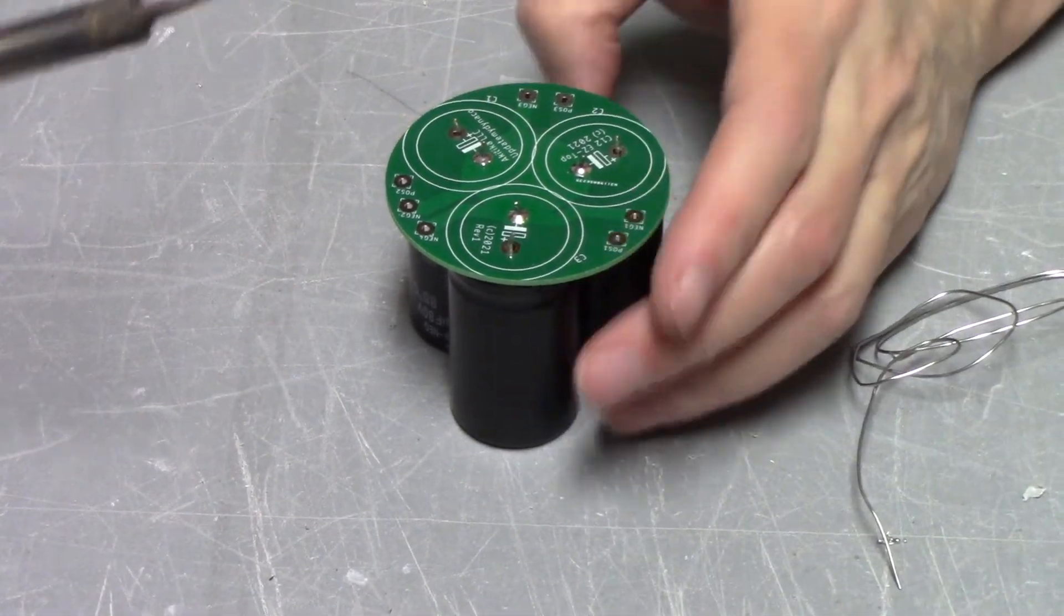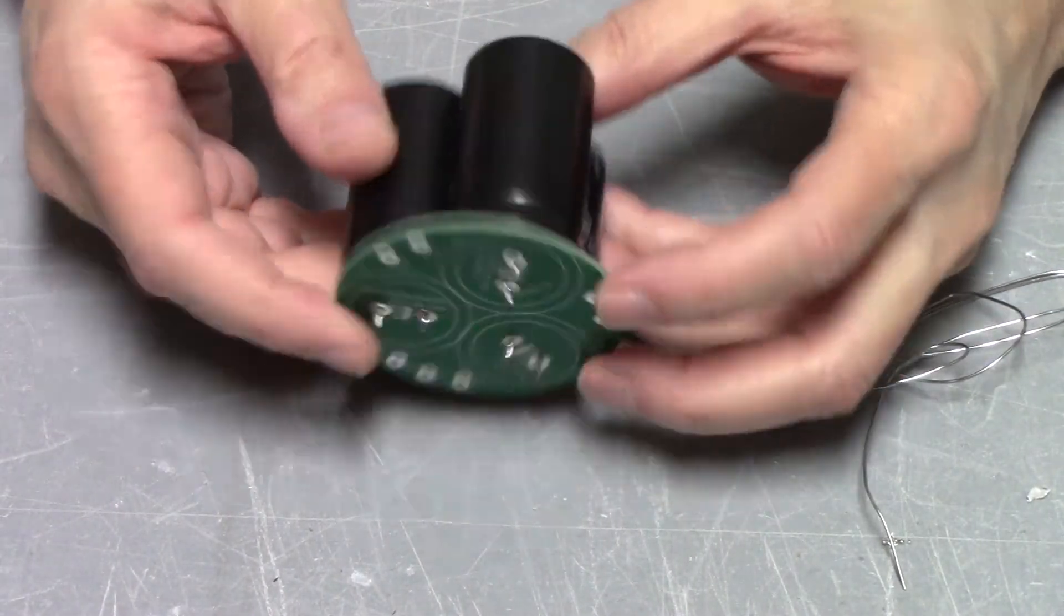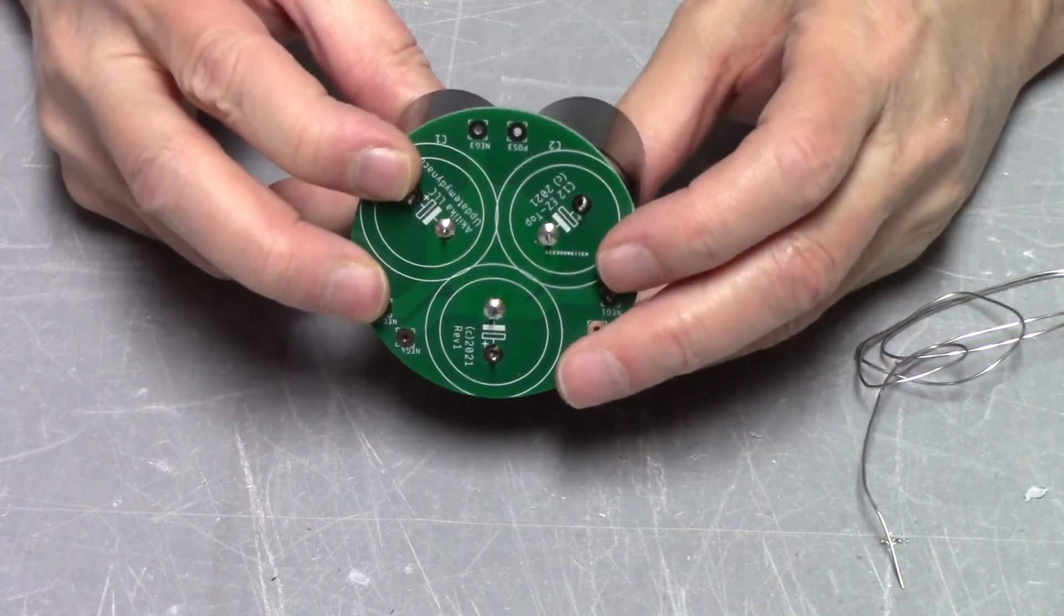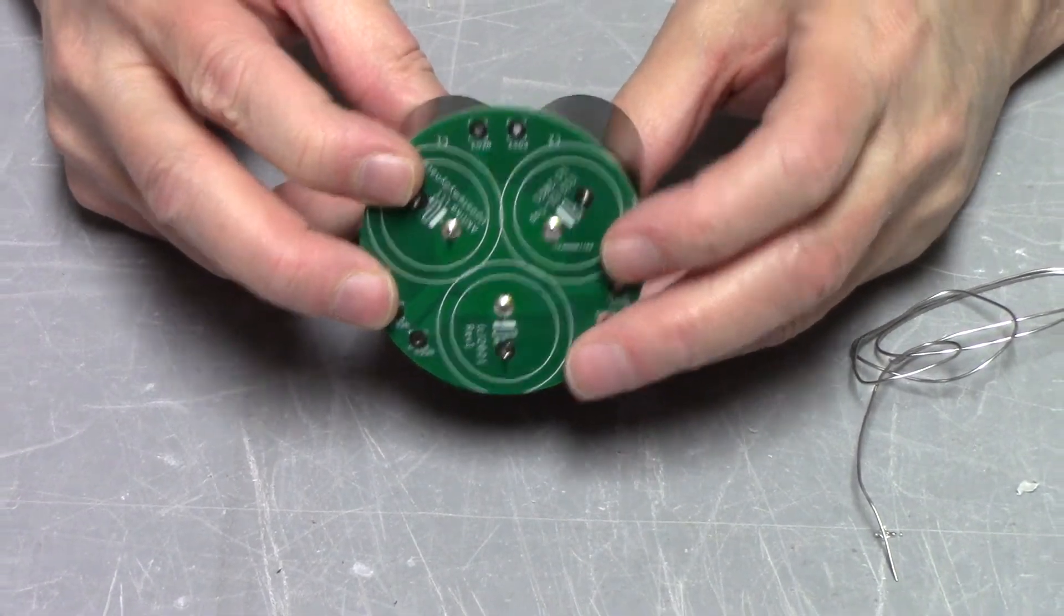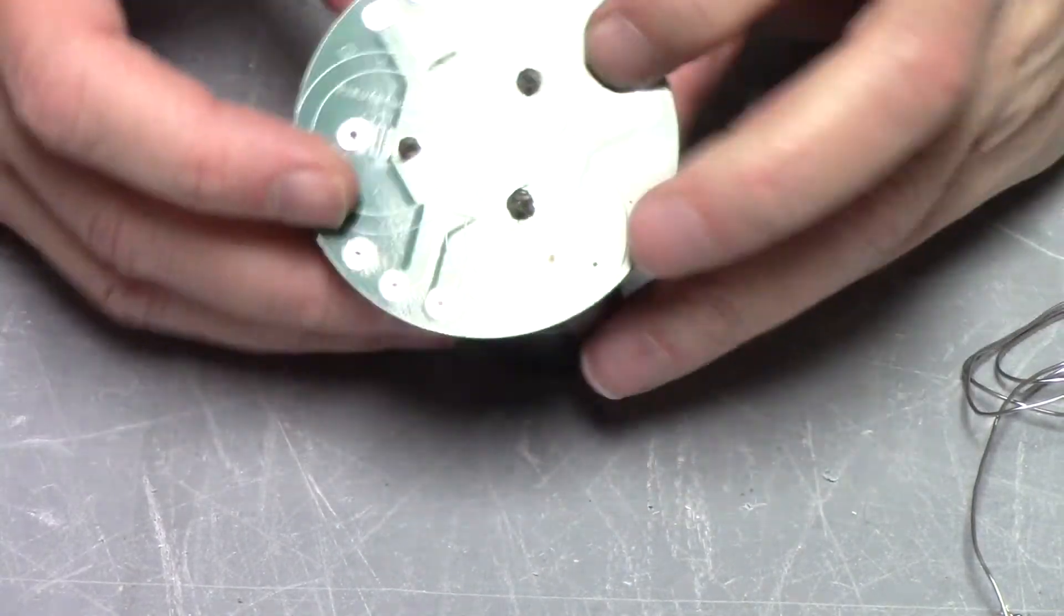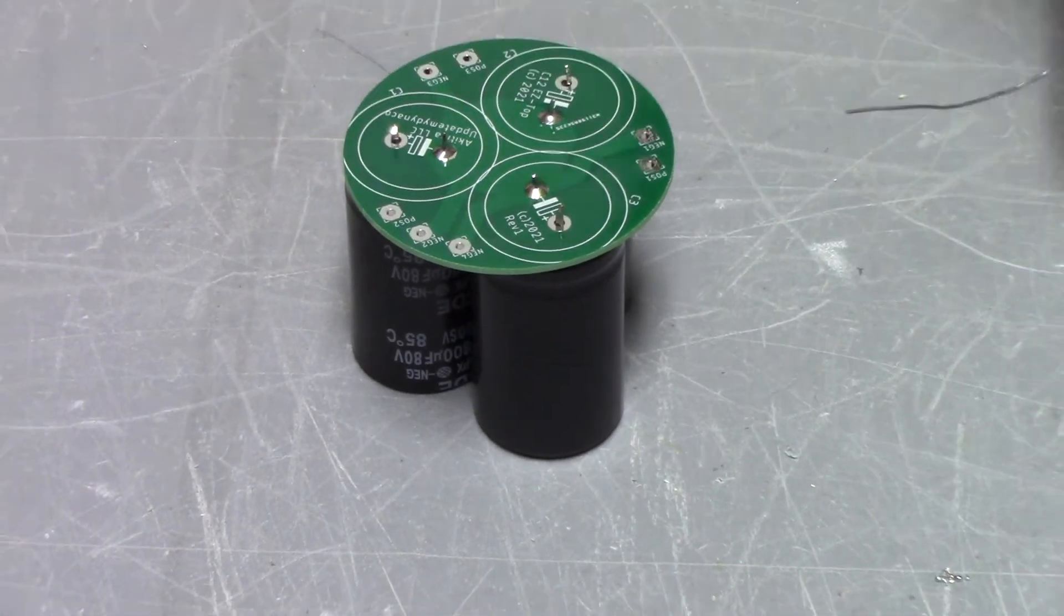Okay. Now, before we go further, let's take a look and see what we're looking for. What we're looking for is that the capacitors sit dead flush onto the PC board. All right. Those three look pretty good. So what we'll do is we'll do the last three.